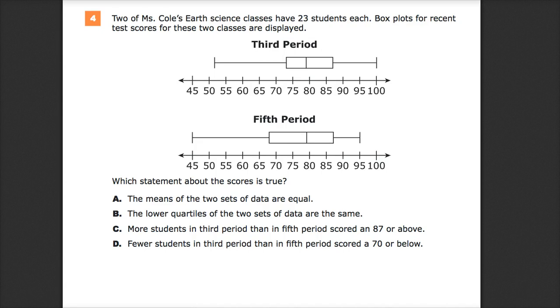Two of Ms. Cole's Earth Science classes have 23 students each. Box plots for recent test scores for these two classes are displayed. I have class 1 and class 2, so third period and fifth period. Which statement about the scores is true? We're looking at box and whisker plots.